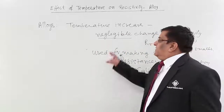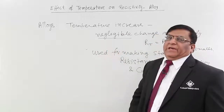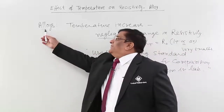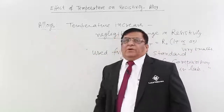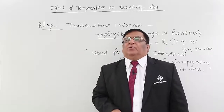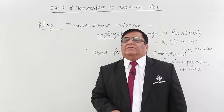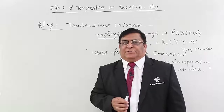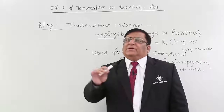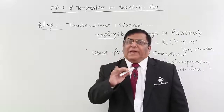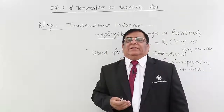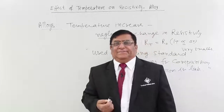So this was the resistance of alloys. In the next lecture, we will study how the resistance of electrolyte compounds changes. Electrolytes are liquids — current flows through them, and if they are heated, what is the change in current? That we will study in the next lecture.